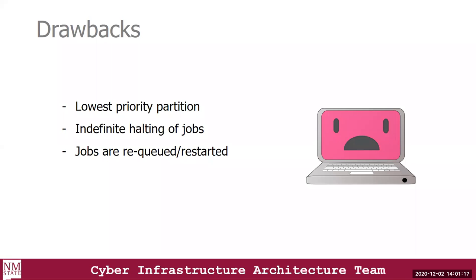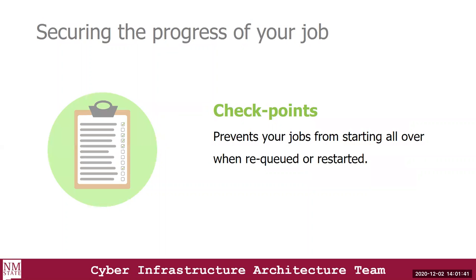In a case where your jobs are kicked out because your job is a low priority job, your job is definitely going to be requeued or restarted. When that happens, you could lose the progress of your job — and we don't want that to happen. So that's why we need to know how we can secure the progress of our jobs. The way you can do that is to add checkpoints to your script or code.